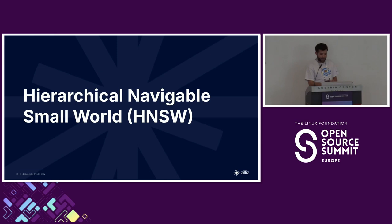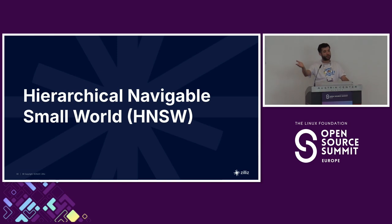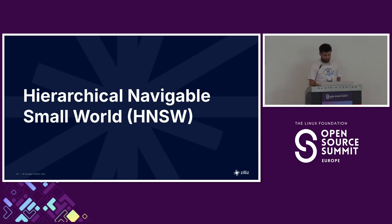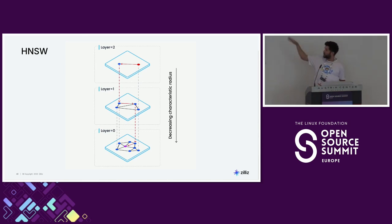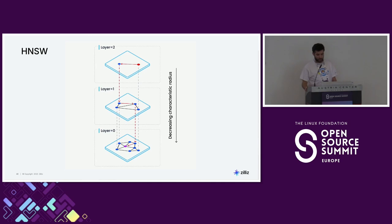Then you have the classic HNSW — Hierarchical Navigable Small World — which is usually used by default. It's graph-based, so the graph is fully stored in memory, which can be costly. Also, if you want to update it, you usually have to rebuild the entire index — the whole graph — which can take a very long time. How it works: you start at the top layer, have your query, and look for the nearest neighbor, then go deeper to layer one with more points, then layer zero at the bottom which has all the points. You find the nearest point to your query very quickly because it's graph-based.